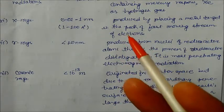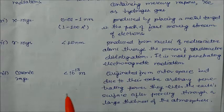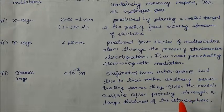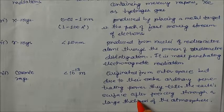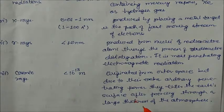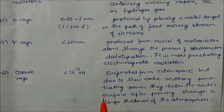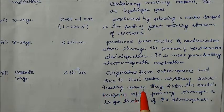Gamma rays, X-rays, ultraviolet, and cosmic rays are all harmful. Cosmic rays have very small wavelengths and originate from outer space, but due to their extraordinary penetrating power they can enter the Earth's surface after piercing through a large thickness of the atmosphere. Cosmic rays are more commonly observed at the North Pole.